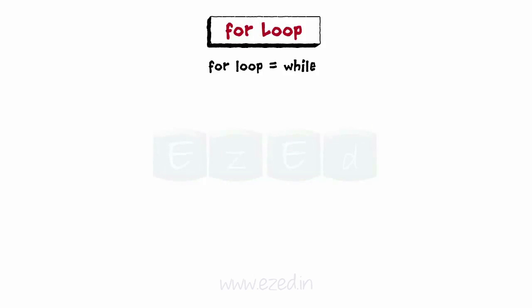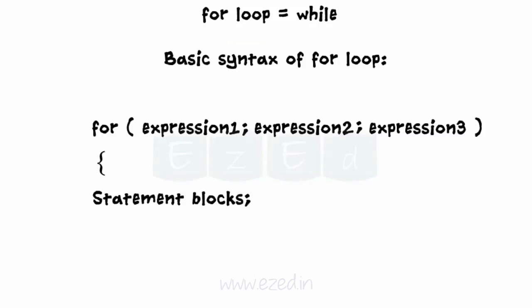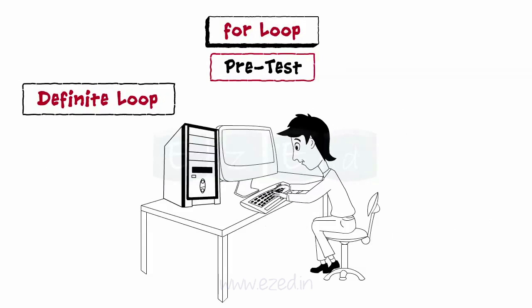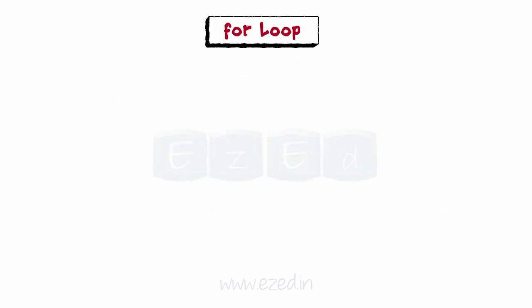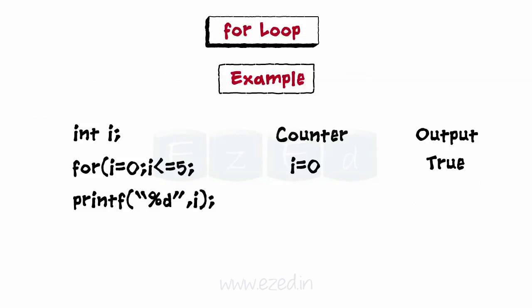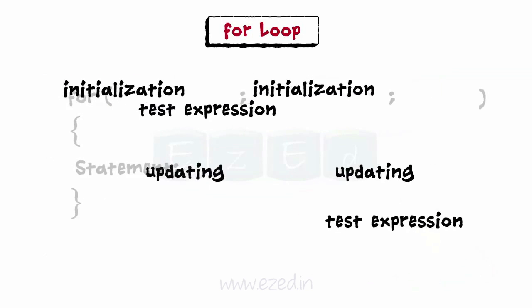Let's now look at the last loop, namely the for loop. The for loop is similar to while, just written differently. In the basic syntax, expression 1 initializes the counter variable, expression 2 is a conditional expression — as long as this condition is true, the loop will iterate — and expression 3 is a modifier, which may be the simple increment of a variable. A for loop is a pretest loop. It is called a definite loop as the programmer knows exactly how many times it will be repeated. A simple example: i is initialized to 0, the test expression checks if i is less than or equal to 5. If true, the printf statement is executed; else the next instruction after the loop is executed. The counter variable i is incremented and control jumps back to the loop test condition. All three parts of initialization, testing, and updating are included in one statement.